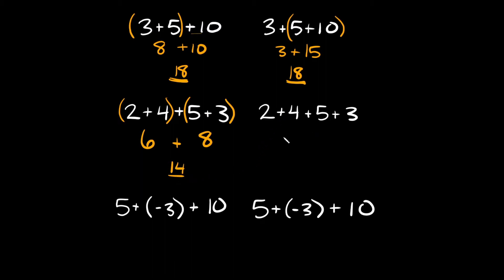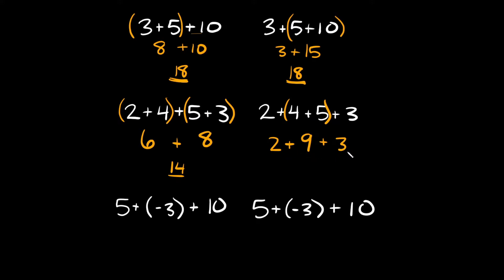Now on this side, let's just put the parentheses over the middle, over the 4 plus 5. So that's where I'll start: 4 plus 5 is equal to 9, and then I'll bring down these other numbers. So 2 plus 9, and then this plus 3. So 2 plus 9 is equal to 11, and then 11 plus 3 is again equal to 14. As you can see, still the same answer.